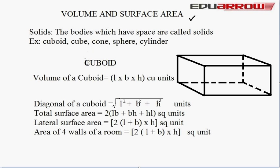First we read about cuboid. The volume of the cuboid is equal to L into B into H. This side is the length of the cuboid, this is the breadth of the cuboid, and this one is the height of the cuboid. Now we read the diagonal of the cuboid, which is equal to the square root of L squared plus B squared plus H squared.